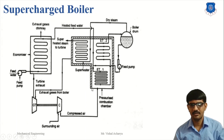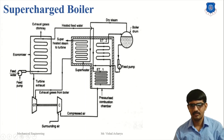The supercharged boiler: air is compressed by the compressor and supplied to the furnace where hot gas is produced. The hot gas then passes through and does work. The exhaust gases go to the economizer for water heating. Water is supplied into the economizer where temperature increases. From the economizer, water goes to the boiler tube where temperature increases further and is converted into saturated steam, then passed to the superheater and converted into superheated steam by the help of the gases.